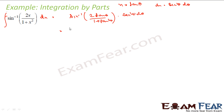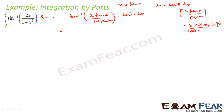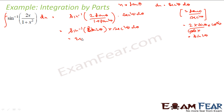Substituting, we get sin⁻¹(2 tan θ / (1 + tan²θ)) times sec²θ dθ. Now 2 tan θ / (1 + tan²θ) equals 2 sin θ cos θ = sin 2θ, since tan θ = sin θ/cos θ and 1/sec²θ = cos²θ cancel appropriately. So the integral becomes sin⁻¹(sin 2θ) times sec²θ dθ, which equals 2θ · sec²θ dθ.